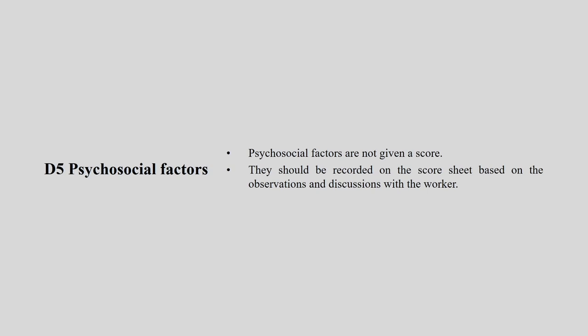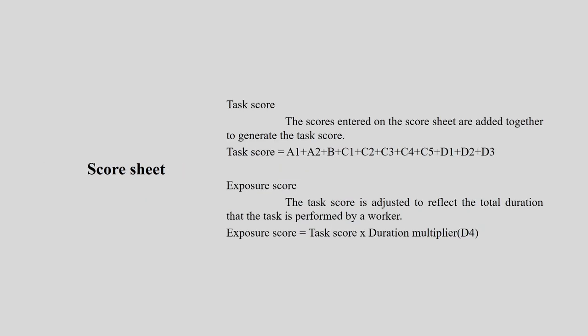D5 is the psychophysical factor. Psychophysical factors are not given any kind of score — they are only a consideration. They should be recorded on the score sheet based on observation and discussion with the worker, with no scoring system attached.